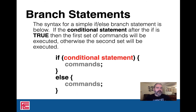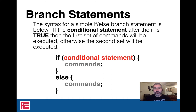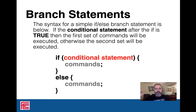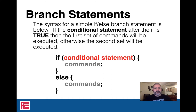This is the generic syntax for a branch statement in C++. There's going to be an 'if', and then after the if in parentheses there's going to be some sort of conditional statement. After that conditional, there are curly braces defining a block of code with one or more commands. Those commands are executed only if that conditional statement turns out to be true. Otherwise, we have an else block, and the else block doesn't have a conditional statement — that's because it's the default.